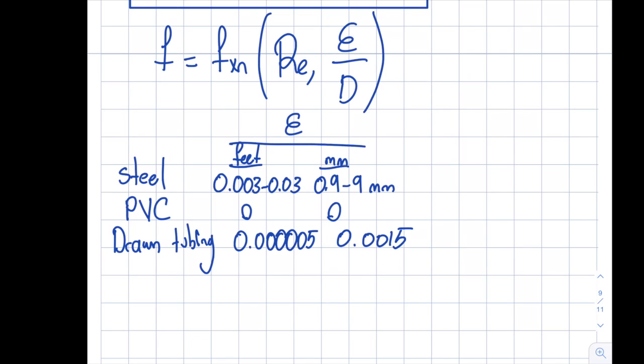Epsilon over D, what is the unit of epsilon over D? It is unitless because I'm dividing length by length. So now I have this Reynolds, epsilon over D, and F.